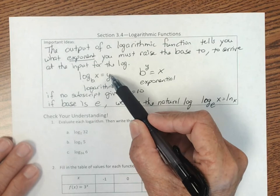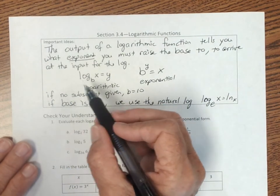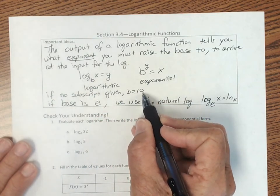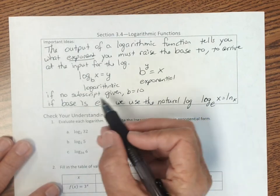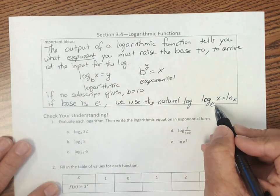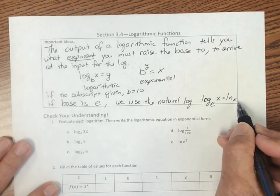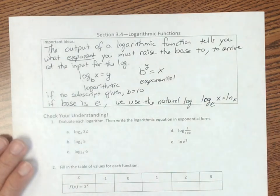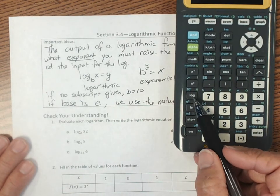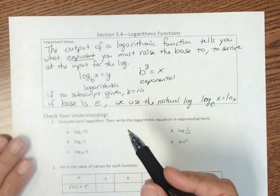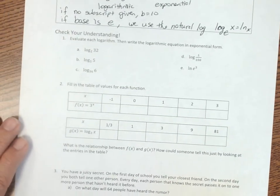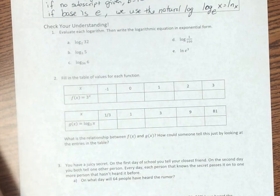If no subscript is given, so no value is written right here, then it is given that the base is space 10. If we have a letter, so if the base is letter e, we use what's called the natural log. So log base e of x is written as ln of x. And you'll notice on your calculators that they do have a special function, ln of x, because we will use that quite a bit. So there's log and there's ln of x. So now let's try and do your check your understanding. There's three questions here. Give them a shot and see what you can do with them. You've got this.